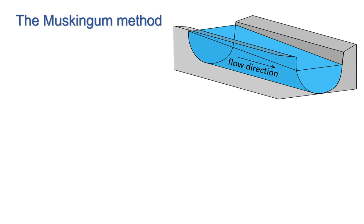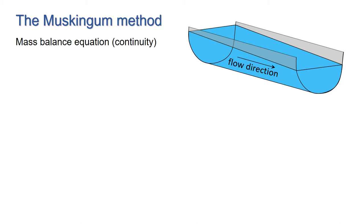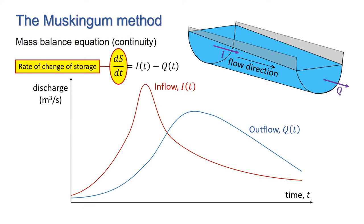Consider a channel such as a river or canal with water flowing along it. The Muskingum method is a lumped routing method for channel flow based on the mass balance equation. Conservation of mass, or continuity, tells us that the rate of change of storage in the reach under consideration is simply the difference between the incoming and outgoing discharge.